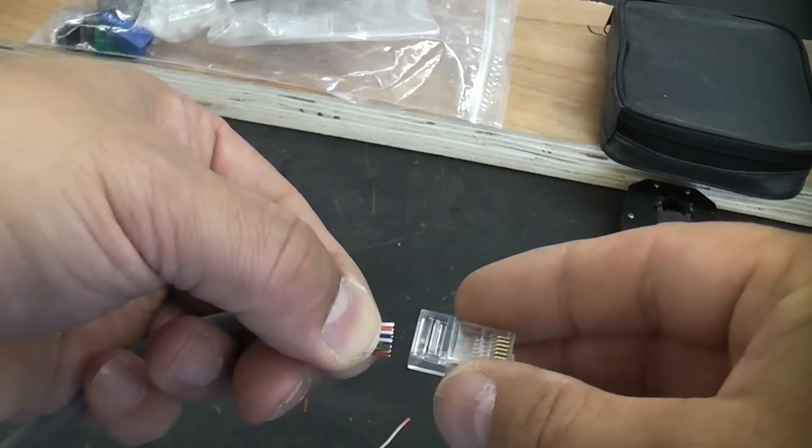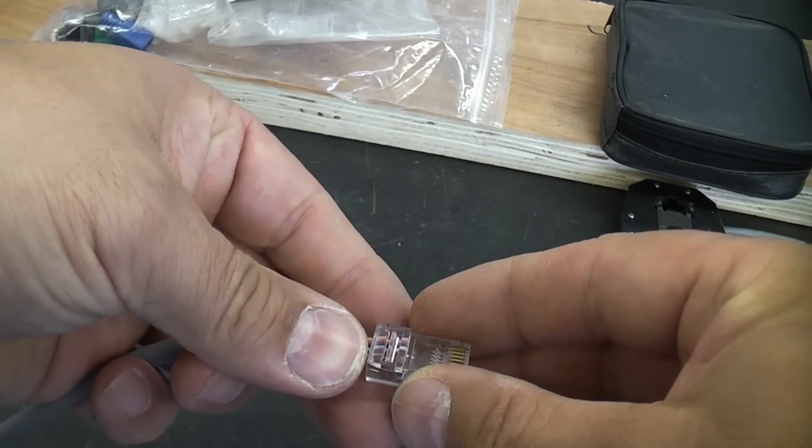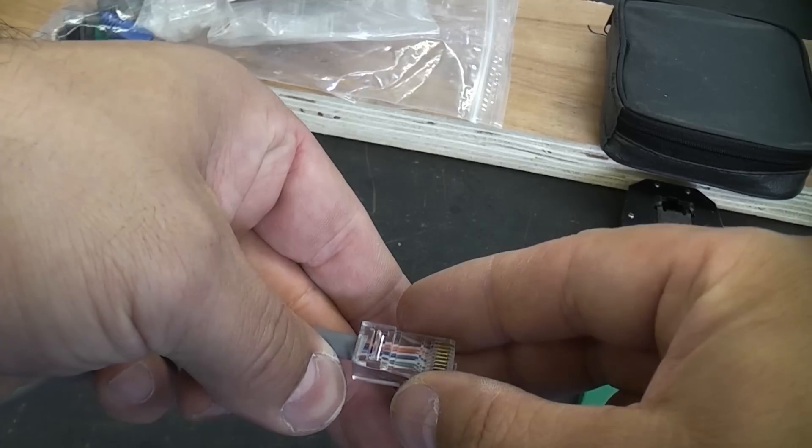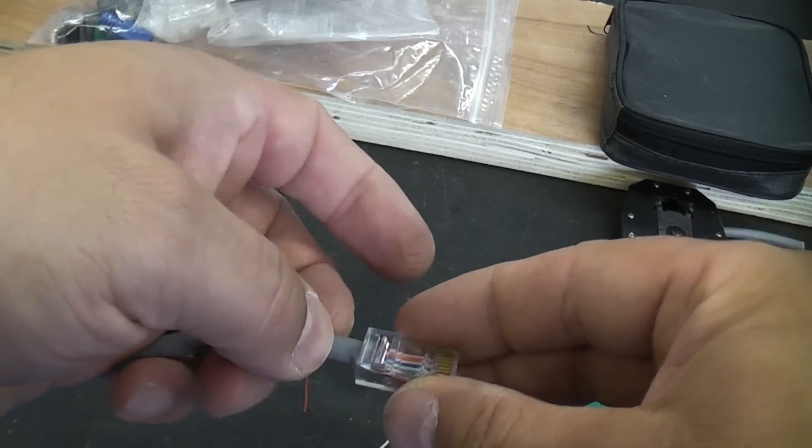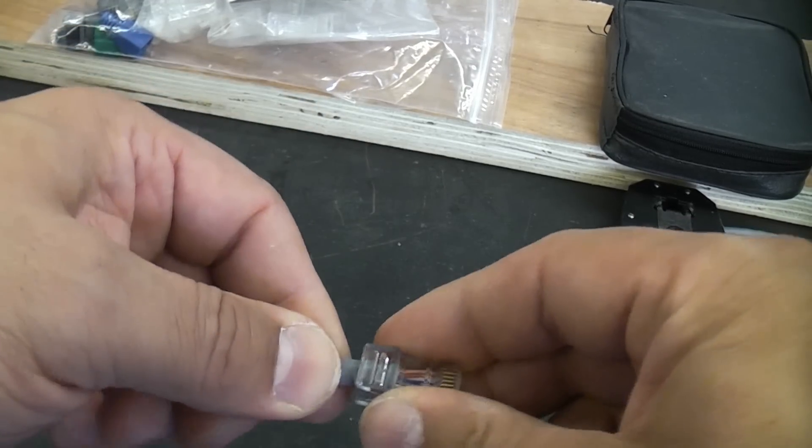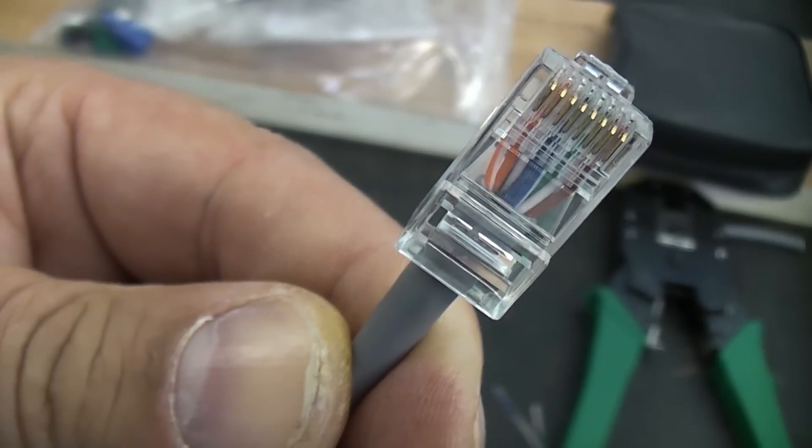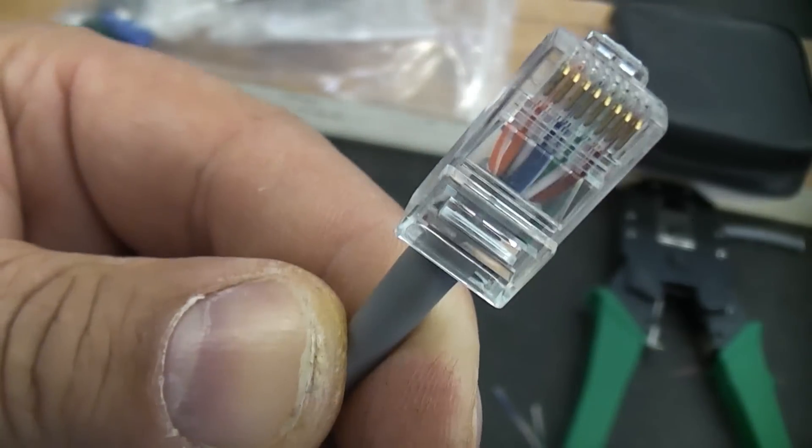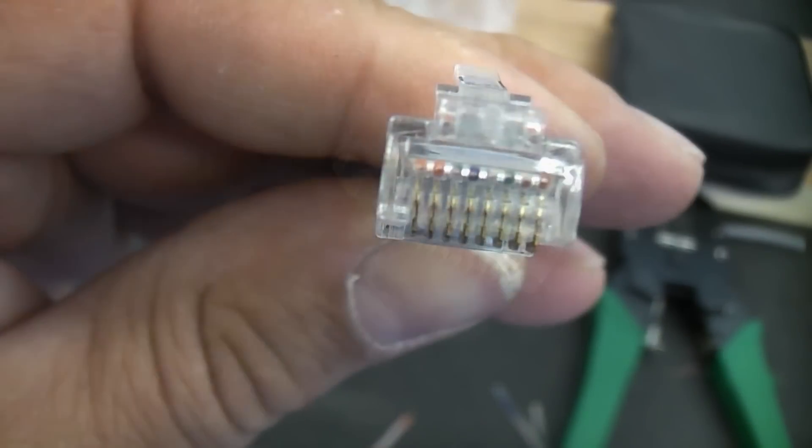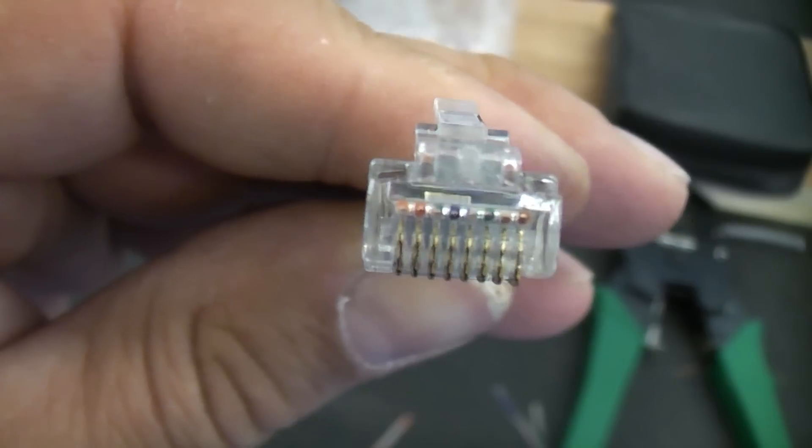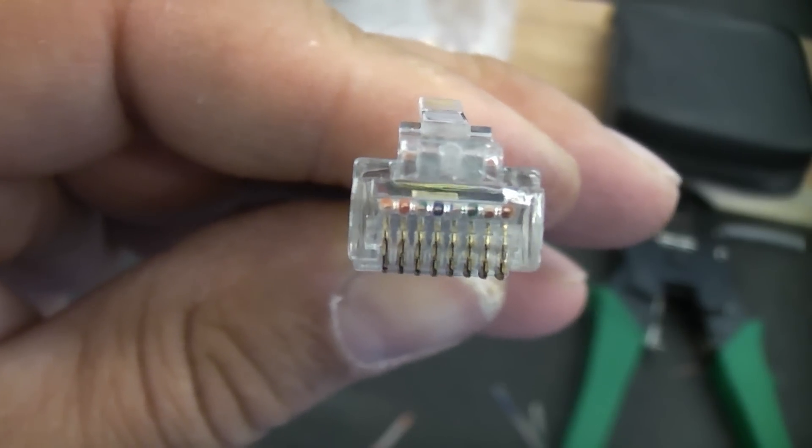We now need to get the connector and push in all of the wires. When you push them in they will slide underneath the pins. So that needs pushing in there quite firmly. You can now see that every wire has gone into the correct pin. We're just going to check that and if you look at the end there you can see that every wire is touching the end of the RJ45 connector.